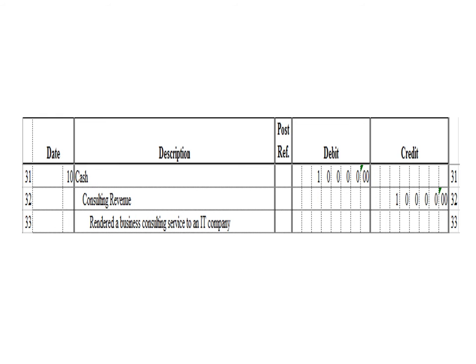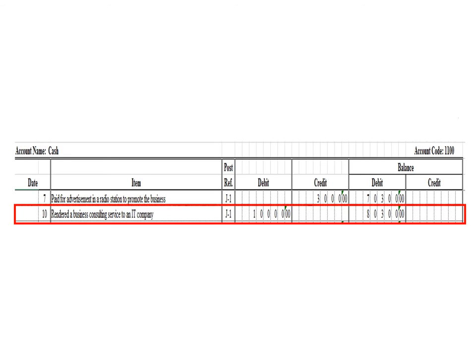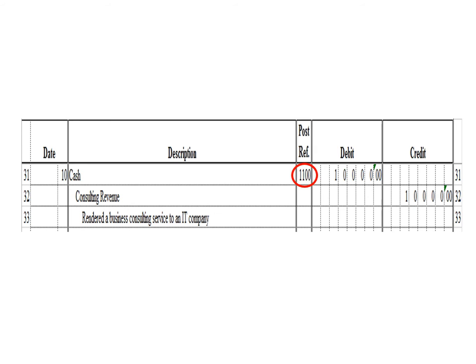Next transaction: a debit to cash for 10,000 pesos and a credit to consulting revenue 10,000 pesos. To post the debit entry in the cash ledger, we write date 10, description: rendered a business consulting service to an IT company, posting reference J1. Under the debit column, write 10,000 pesos. The balance is 80,300 pesos — previous balance of 70,300 debit plus 10,000 debit. As of March 10, the cash ledger balance is 80,300 debit. After posting, write posting reference 1100.